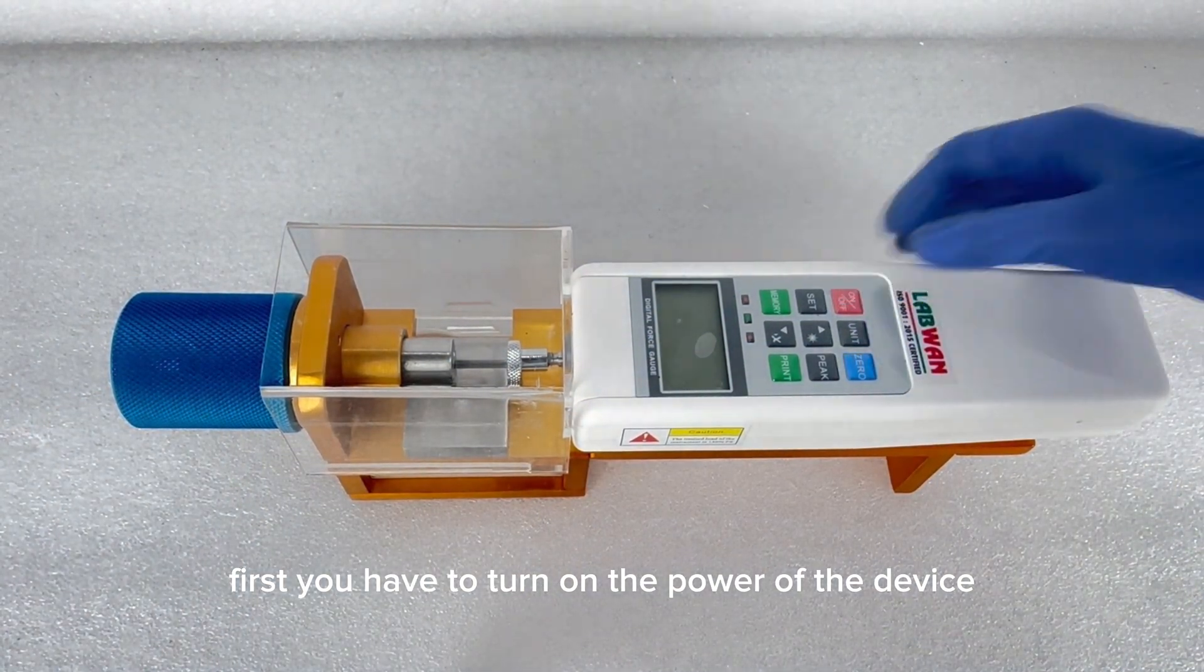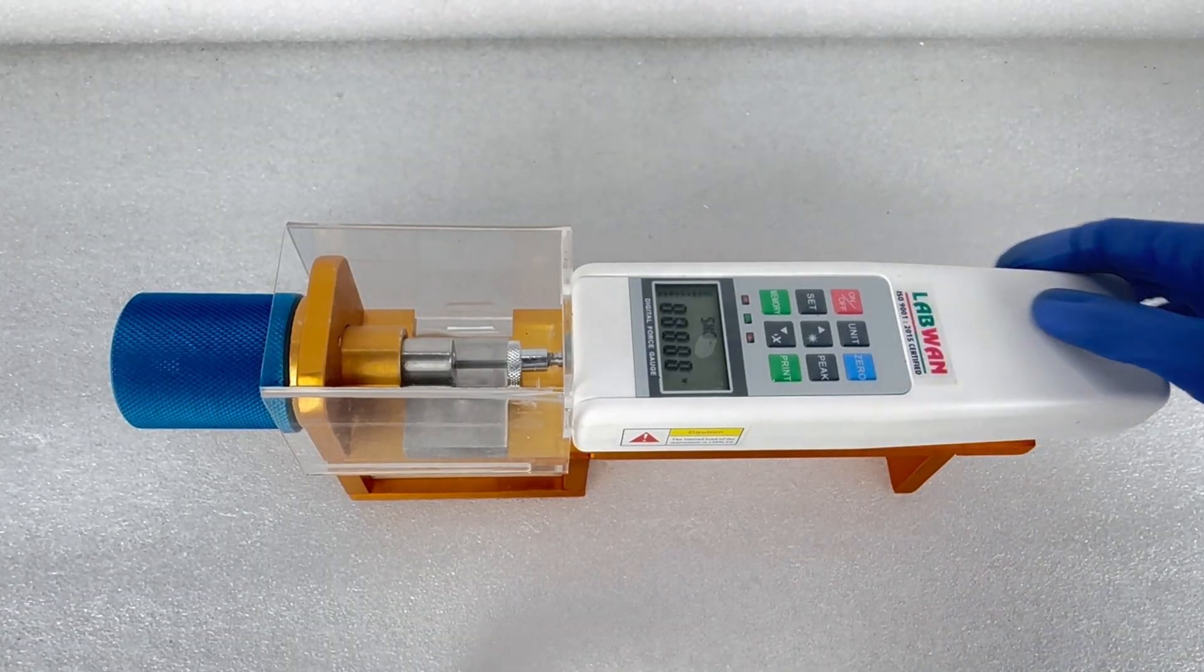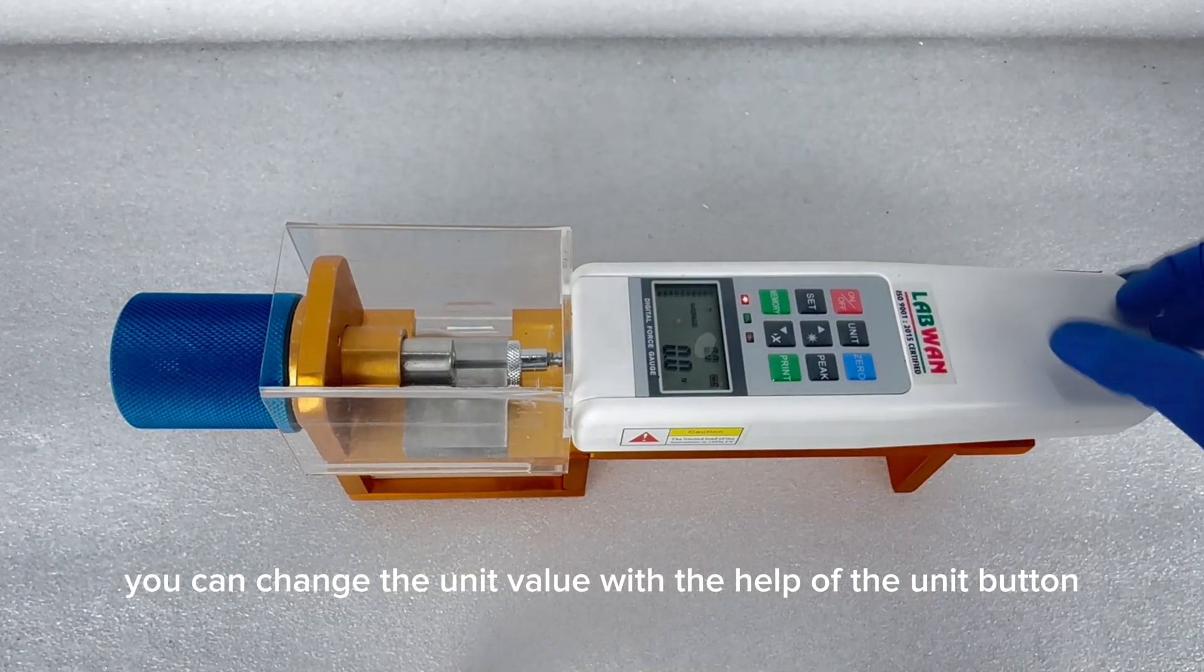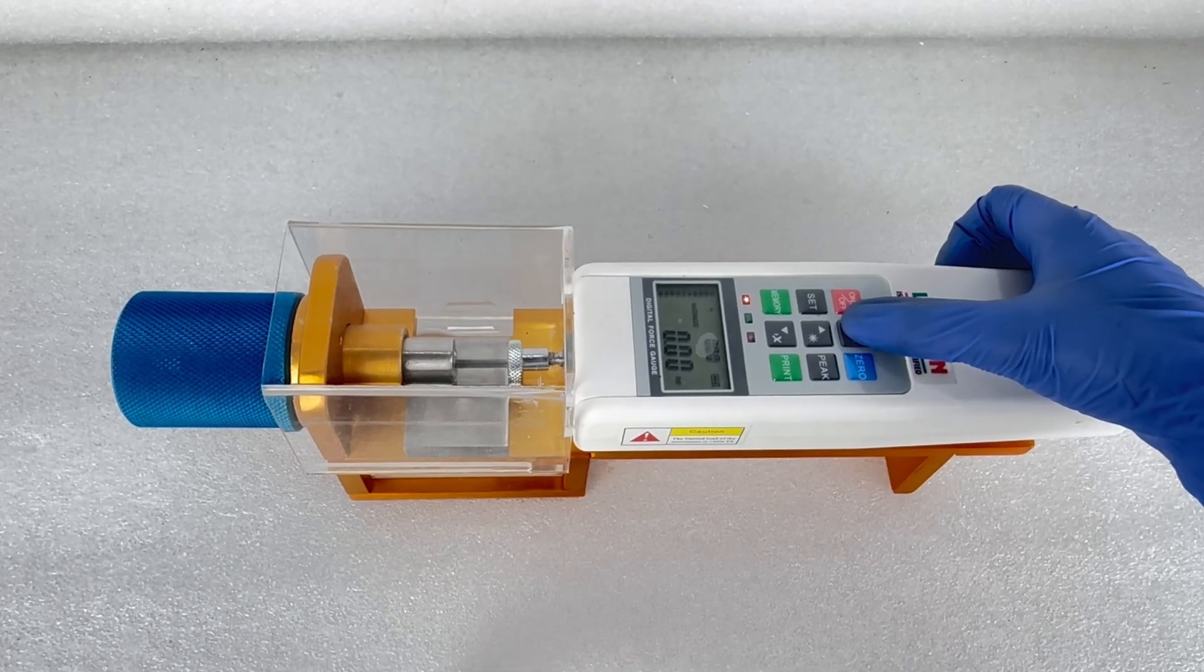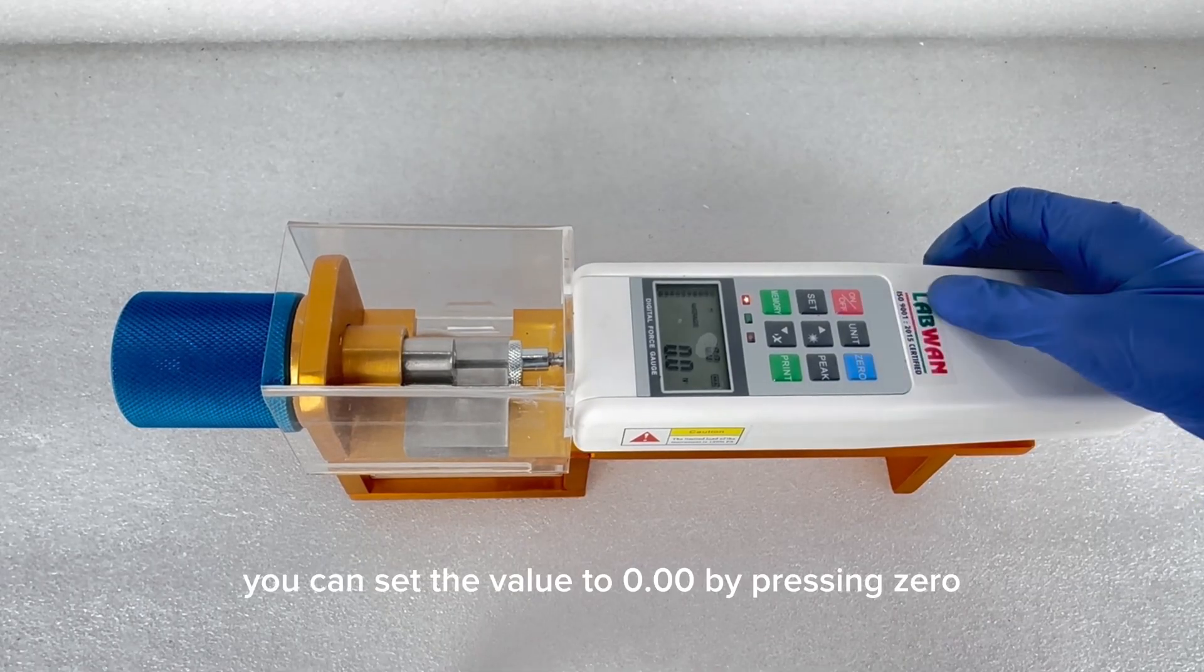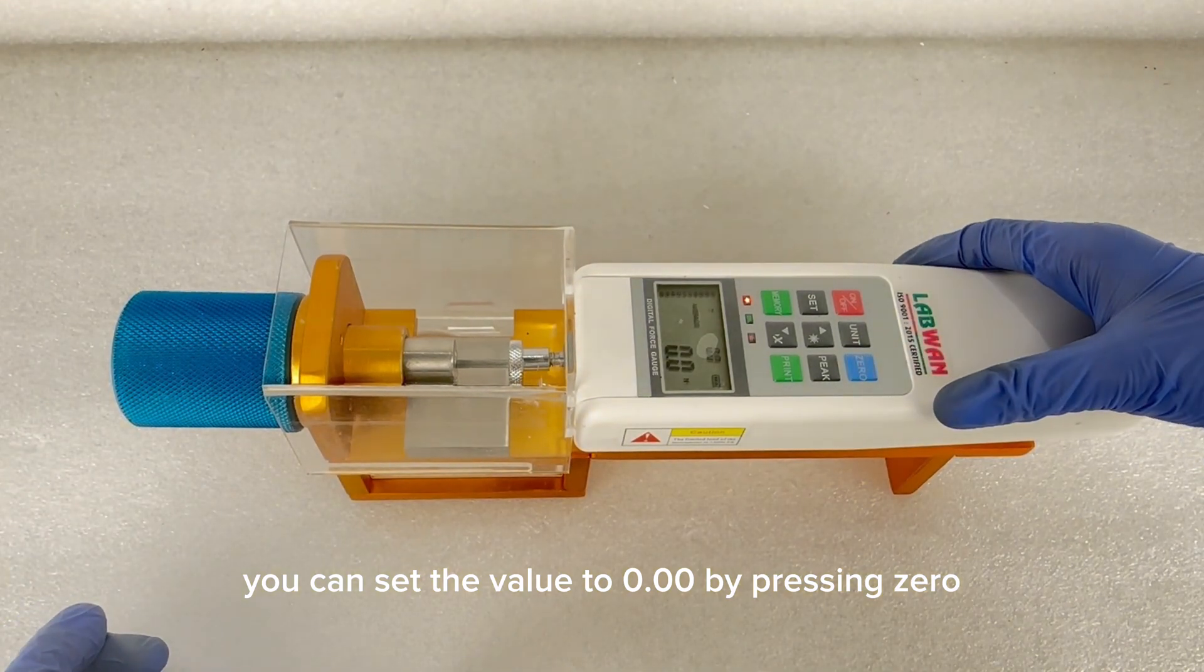You have to turn on the power of the device. You can change the unit value with the help of the unit button. You can set the value to 0.00 by pressing 0.